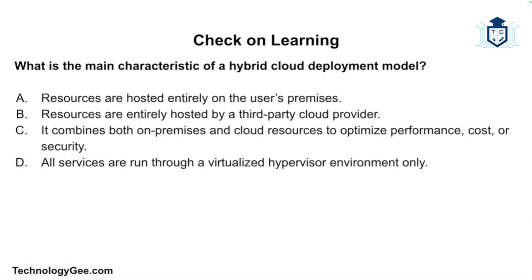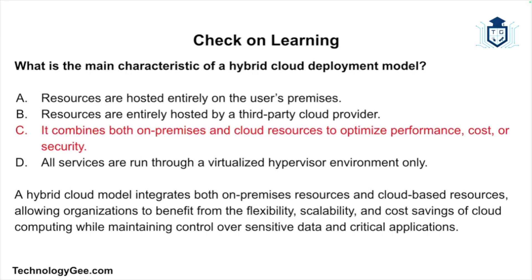Final question: What is the main characteristic of a hybrid cloud deployment model? The correct answer is C — it combines both on-premises and cloud resources to optimize performance, cost, or security. A hybrid cloud model integrates both on-premises and cloud-based resources, allowing organizations to benefit from the flexibility, scalability, and cost savings of cloud computing while maintaining control over sensitive data and critical applications.